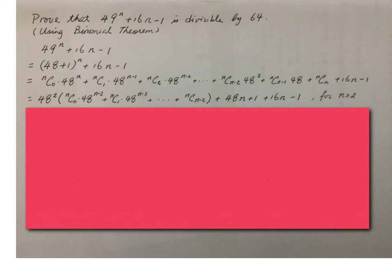Like this part, we just take this factor from this term up to this one. And then we have this expression. And then nC(n-1) is n. Therefore, this term becomes 48n.